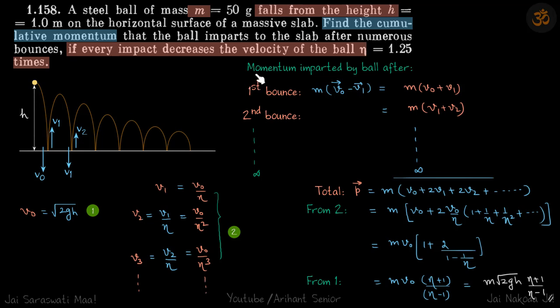Now let's talk about momentum. For cumulative momentum let's go one by one. For the first bounce, the momentum imparted is m into v0 vector minus v1 vector. This is the change in momentum of the ball and that has been given to the floor.